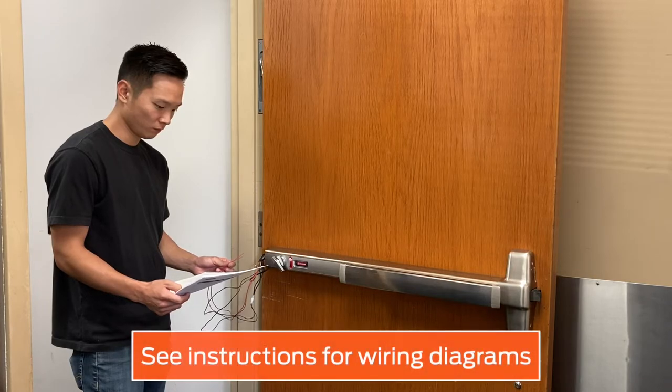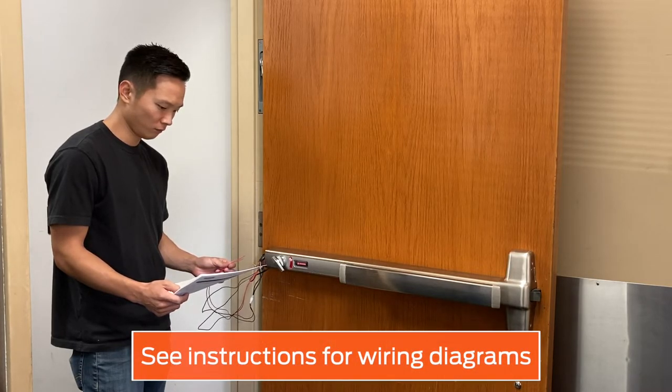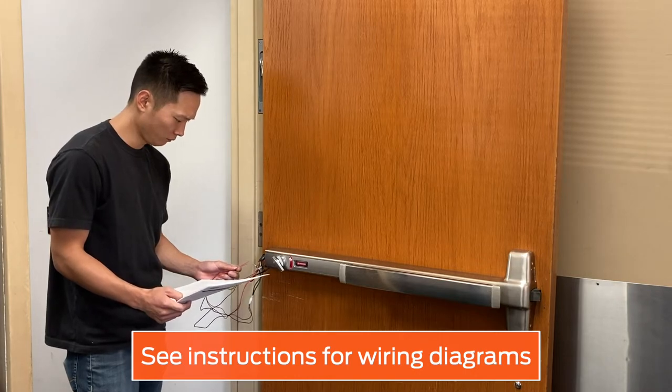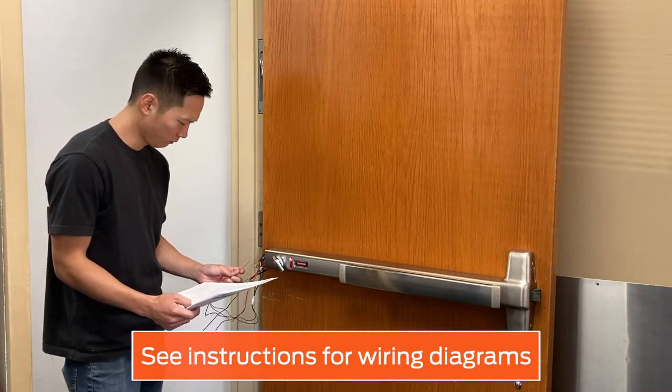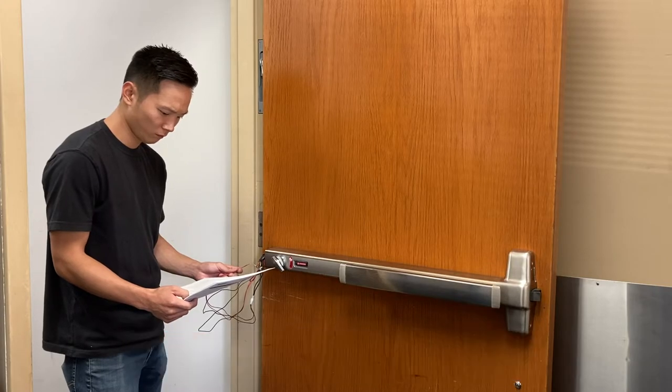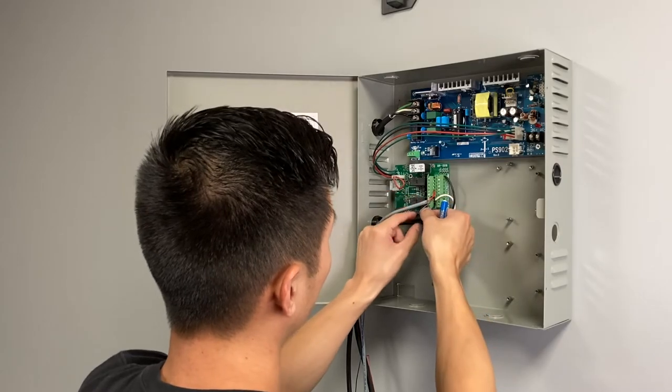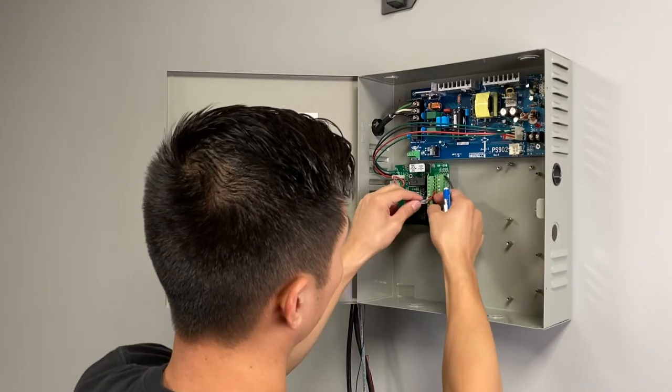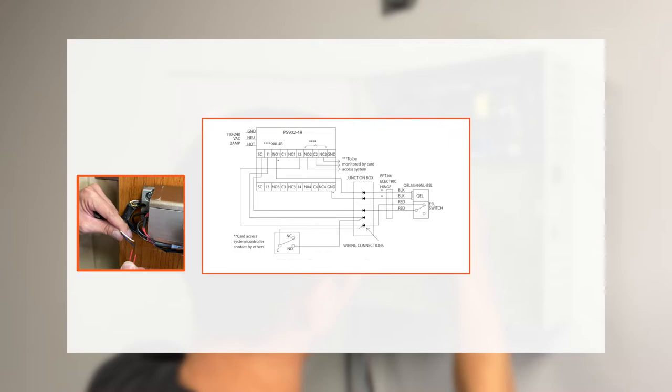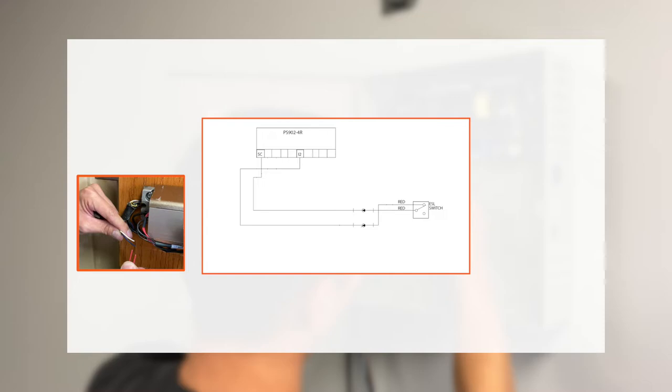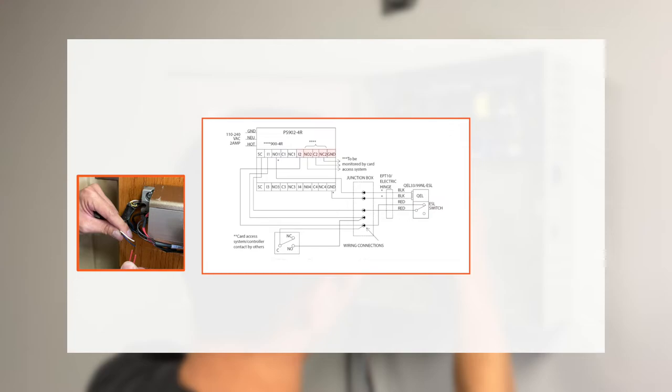For the connection to your access control system, consult the instruction sheet, which contains example wiring diagrams for connecting to a power supply. In this video, the ESL will be connected to a PS900 series power supply with a 900-4R option board. Connect the two red wires from the ESL to the two conductors that terminate on the available input and signal common connections of the 900-4R option board. The instructions show ESL connected to zone 2.